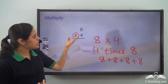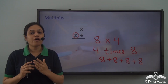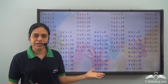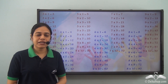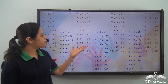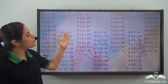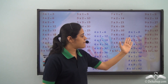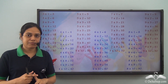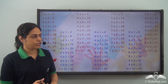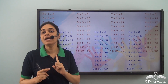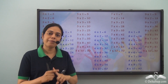But now the question comes — how do I multiply this? For multiplication, we need to remember the multiplication tables. We know the multiplication tables till 10. These are the different multiplication tables of 3, 4, 5, 6, 7, 8, 9, and for performing multiplication, it is very important to know these multiplication tables by heart.